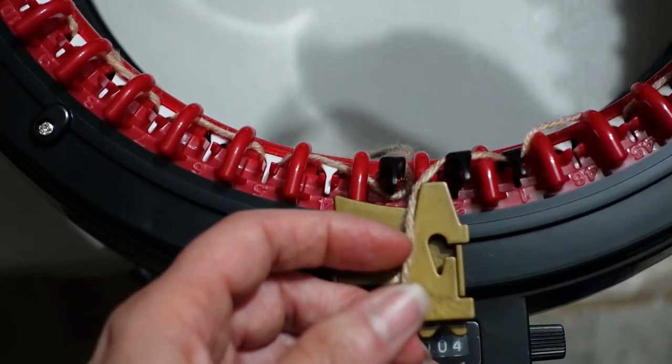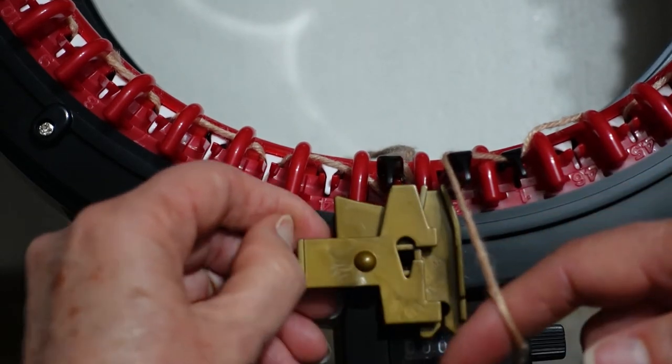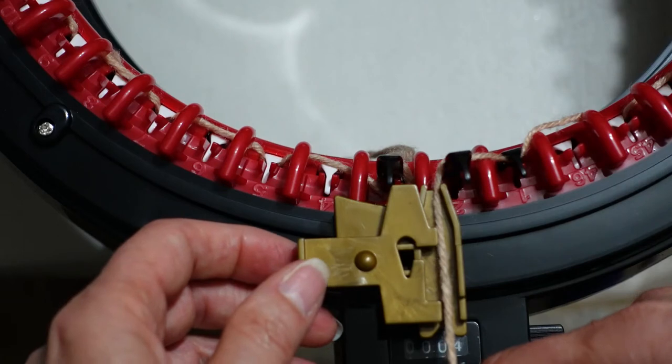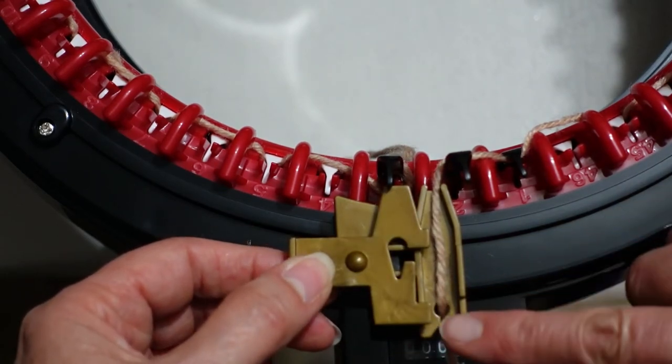So I've done the standard in front, behind, in front, behind for the cast on, and now I'm going to put the yarn in the yarn holder. So you can either put it all the way in and then through that tensioner here at the end...